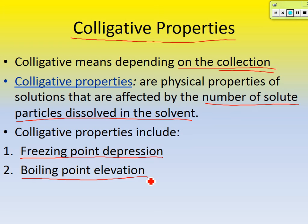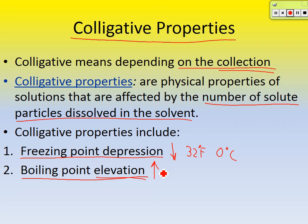Depression means going down. So we're going to make the freezing point of water go down. Water normally freezes at 32 degrees Fahrenheit, but in science we say zero degrees Celsius. If you put something else in water, the freezing point is going to go down. Boiling point elevation — elevation means you're going to raise it. Water normally boils at 212 degrees Fahrenheit or 100 degrees Celsius. If we put things in water, we can make the boiling point go up.